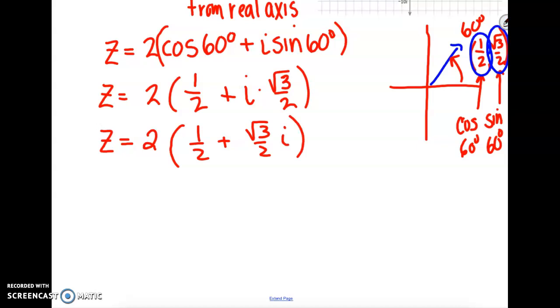Now I need to distribute that 2 into both of those terms. So z equals 2 times 1 half plus 2 times the square root of 3 over 2i. The 2s are going to cancel in both terms.